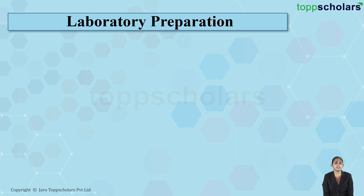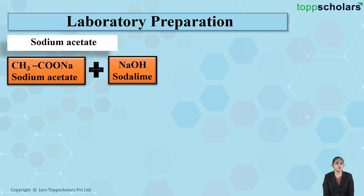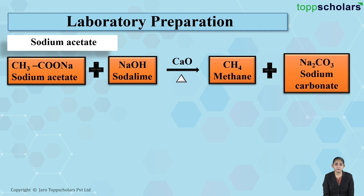Let's talk about the laboratory preparation of methane using sodium acetate. When sodium acetate is heated with soda lime — soda lime is a mixture of sodium hydroxide and calcium oxide — it results in the formation of methane and sodium carbonate.